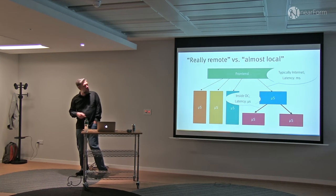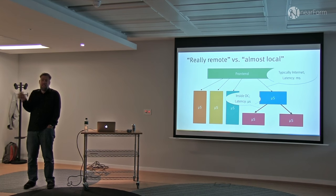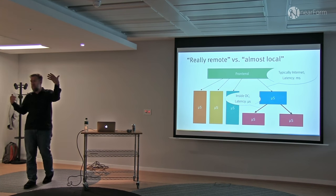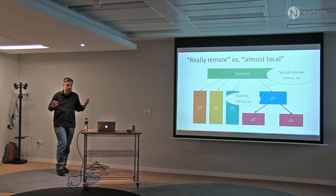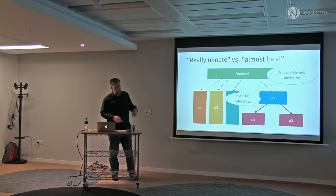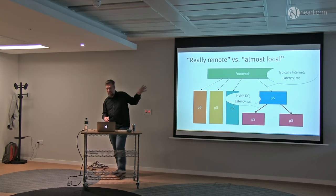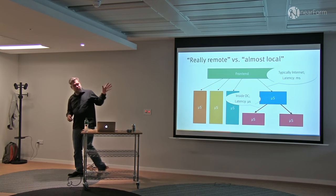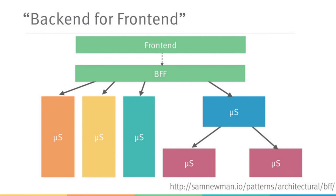It's completely different from the lines within your data center — calls between boxes in the same rack connected by fiber, which are several orders of magnitude faster. This is why you typically end up with a different architecture. Instead of the first picture, you arrive at something called the backend-for-frontend pattern.